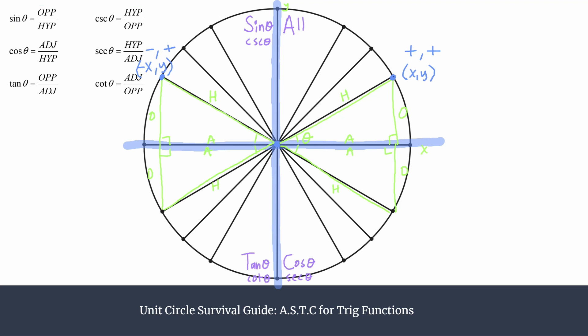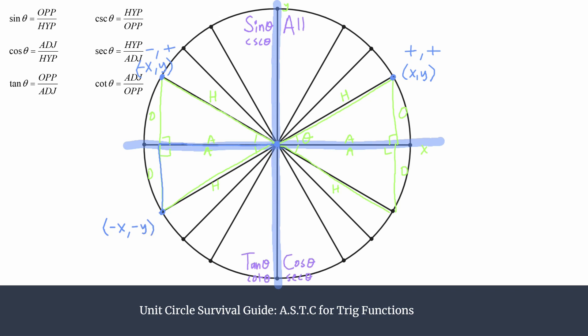In quadrant three, both the adjacent and the opposite are moving in negative directions — we move left and down. So any trig ratio involving either the opposite or adjacent alone will be negative. However, tangent and cotangent use both opposite and adjacent, so two negatives being divided make a positive. That's why tangent and cotangent are positive in the third quadrant. Our point here is negative x, negative y.